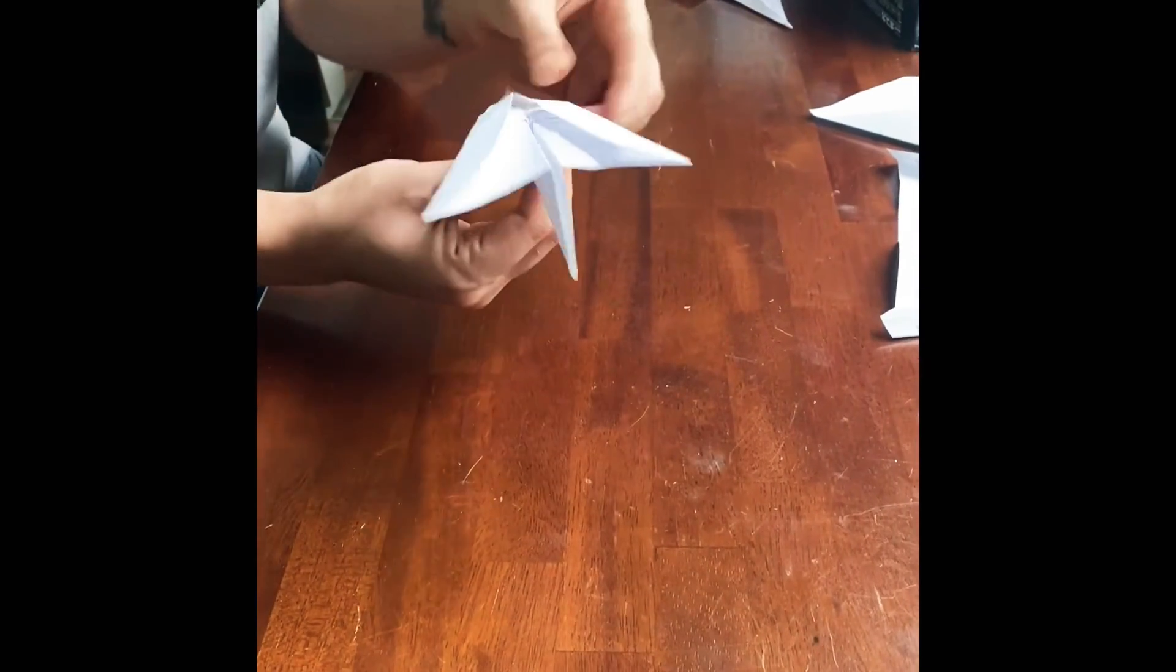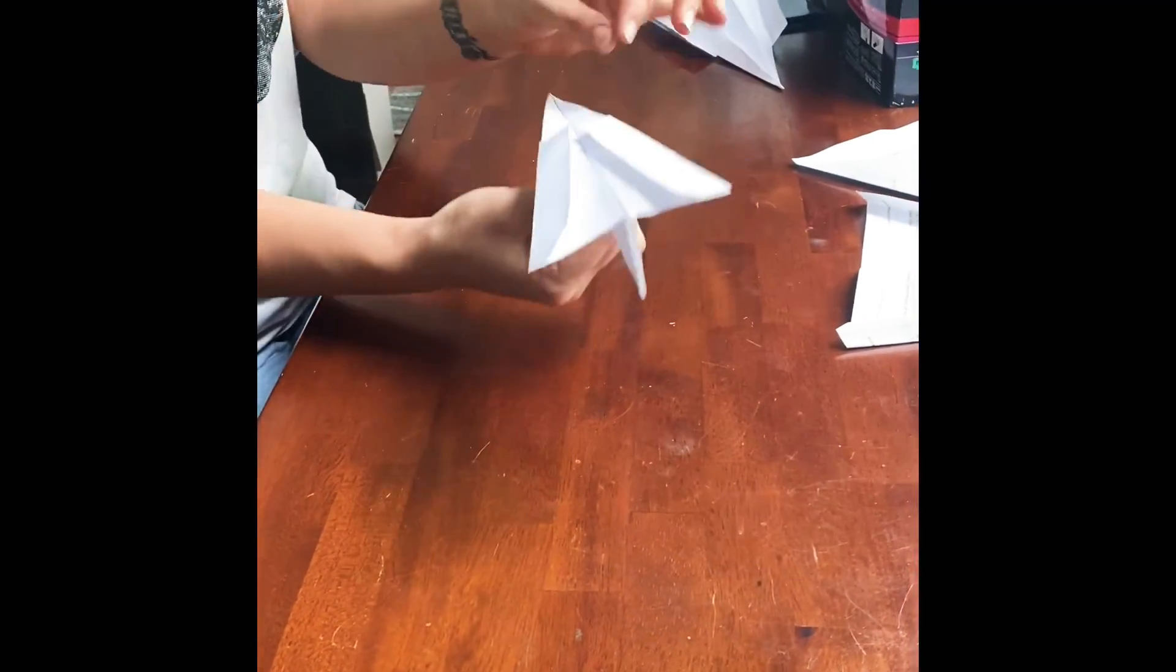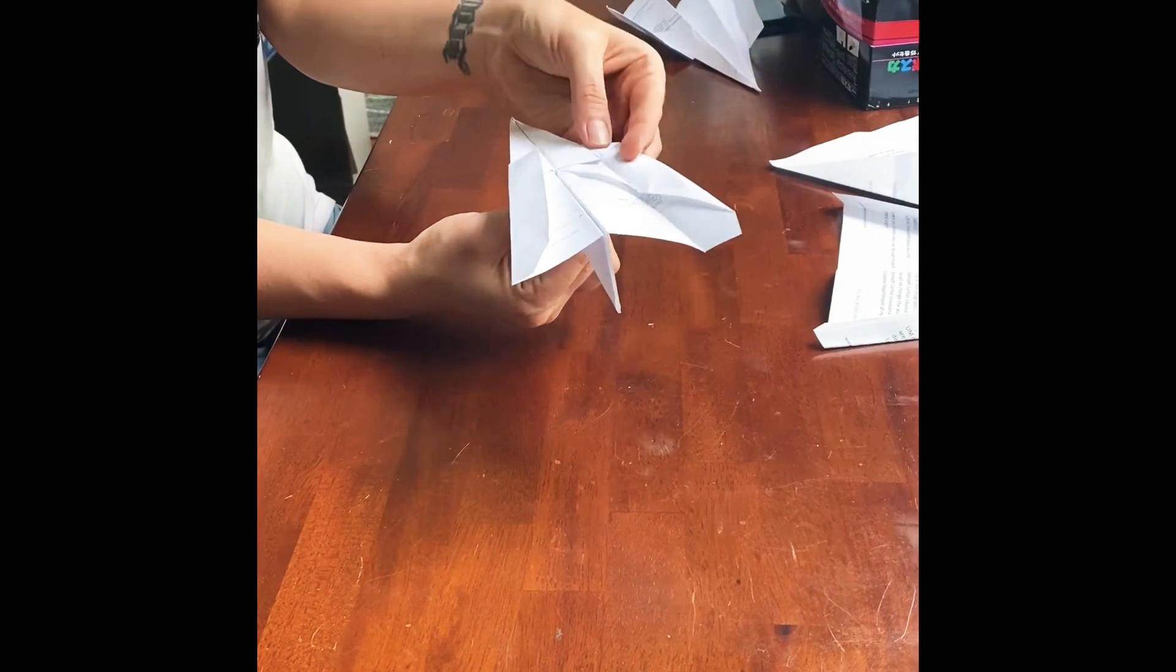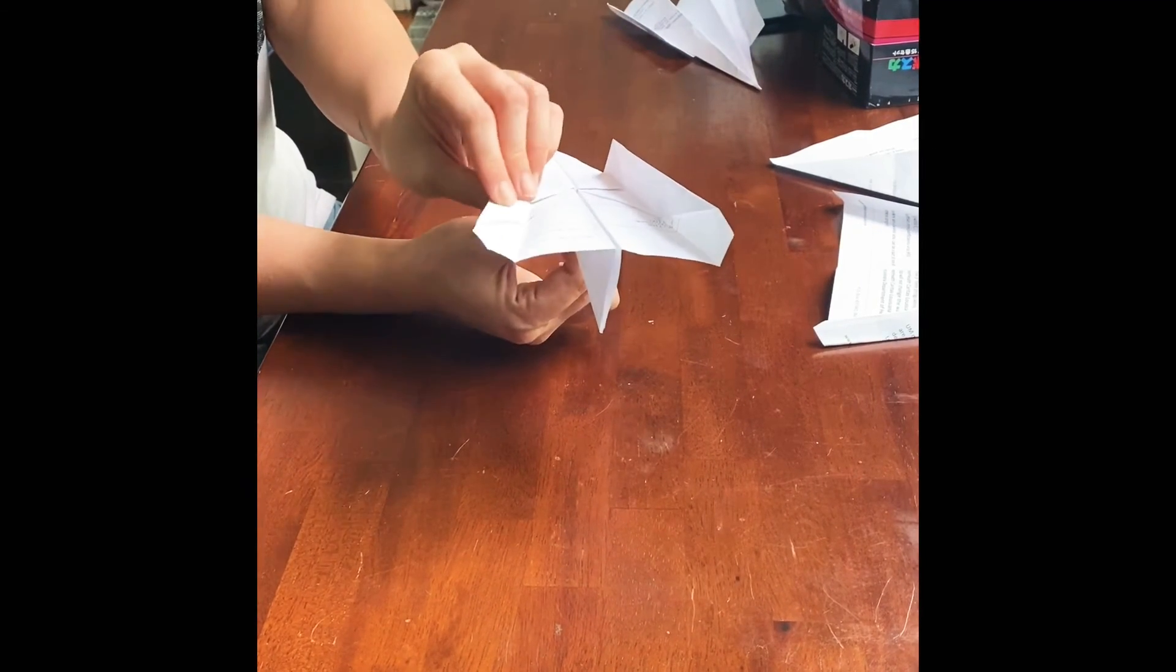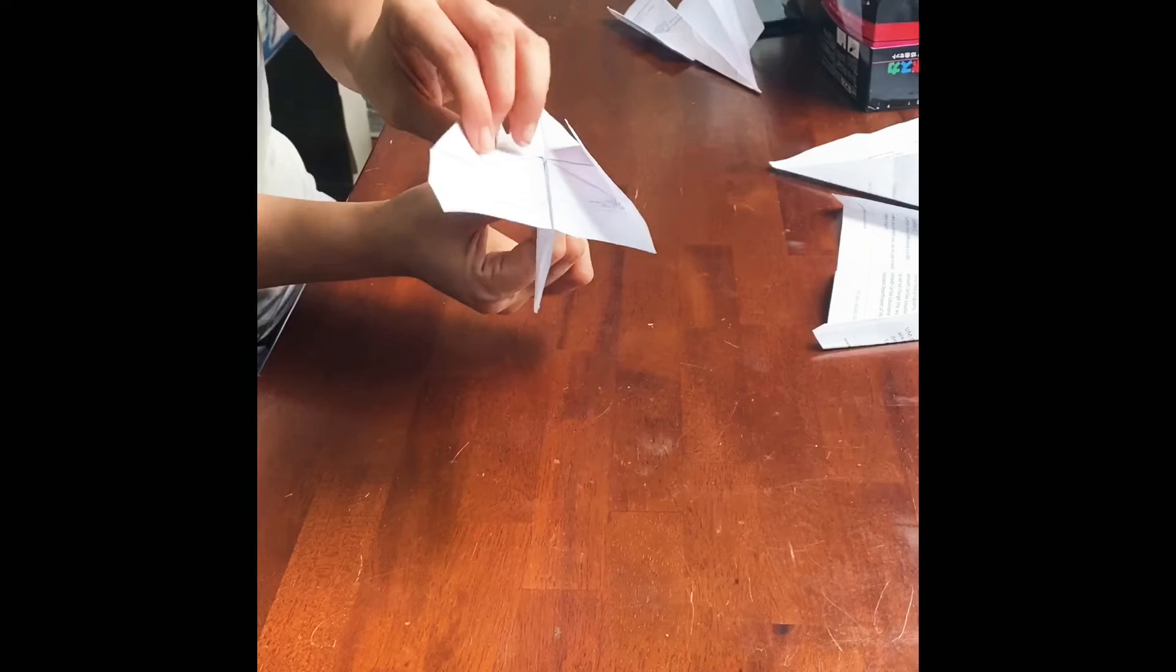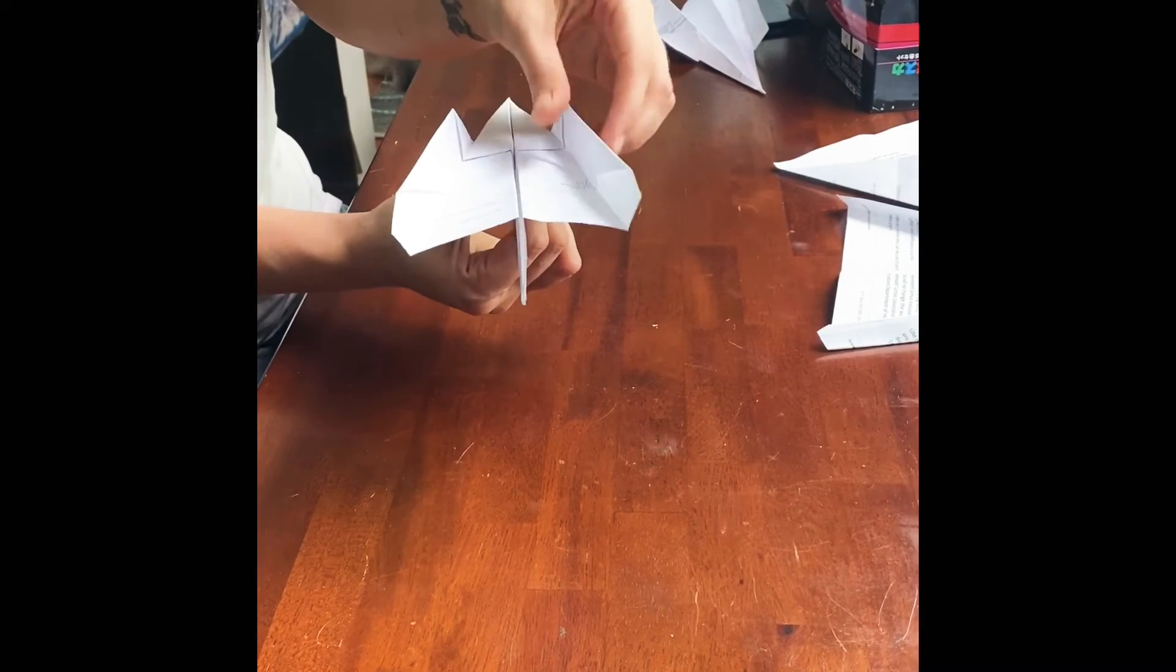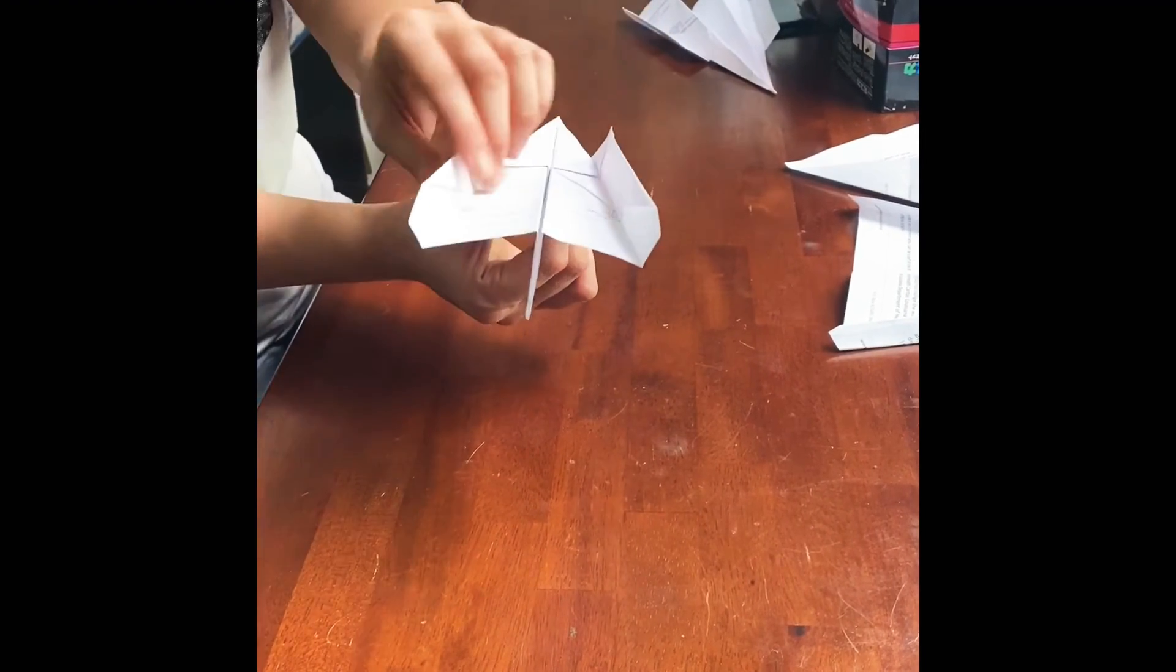Now when you straighten it out, you should have something that looks like this. You hold it here and you can lift these flaps. You can play around with these flaps. Maybe you'll find your plane is flying too high or too low, you can raise and lower these a little bit. Now we're gonna take the plane outside and see how far we can fly it.